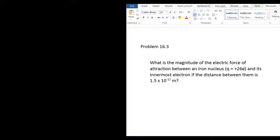So q equals plus 26e, that's because there are 26 protons in the iron nucleus. And that's why it's positive because protons are positive.